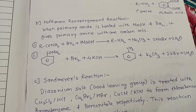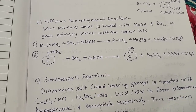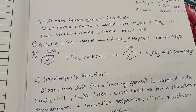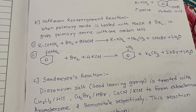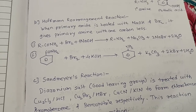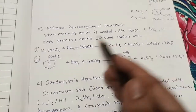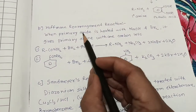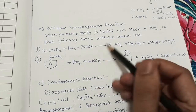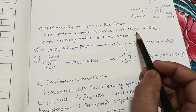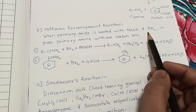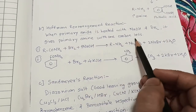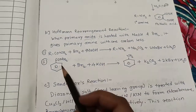The next name reaction is Hoffmann rearrangement. It is used to prepare primary amines — both aliphatic and aromatic. When a primary amide (a derivative of carboxylic acid) is heated with NaOH and bromine, it gives a primary amine with one carbon less.